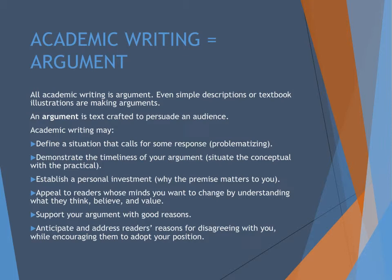Fourth, appeals to readers whose minds you want to change. The goal of lots of arguments is to change existing ideas. Part of doing that means breaking down what an audience thinks is important and why. Fifth, supporting another argument with reasons — some academic writing exists to support or underscore existing academic writing. Finally, sixth, anticipate and address readers' reasons for disagreement. This can sometimes take the form of a refutation or response piece.